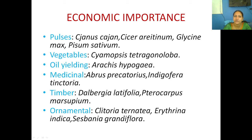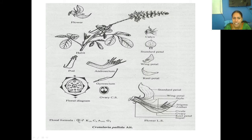This is Lathyrus; this is Clitoria, known as Shankupushpa in Malayalam; and this is the pea plant. The floral formula is: zygomorphic, bisexual, calyx 5 fused, corolla 5, androecium 10 fused, and gynoecium half inferior, half superior, one locular. First draw the habit, then the flower, then the appendages, then the gynoecium — here it is monadelphous. This is the diagrammatic representation.